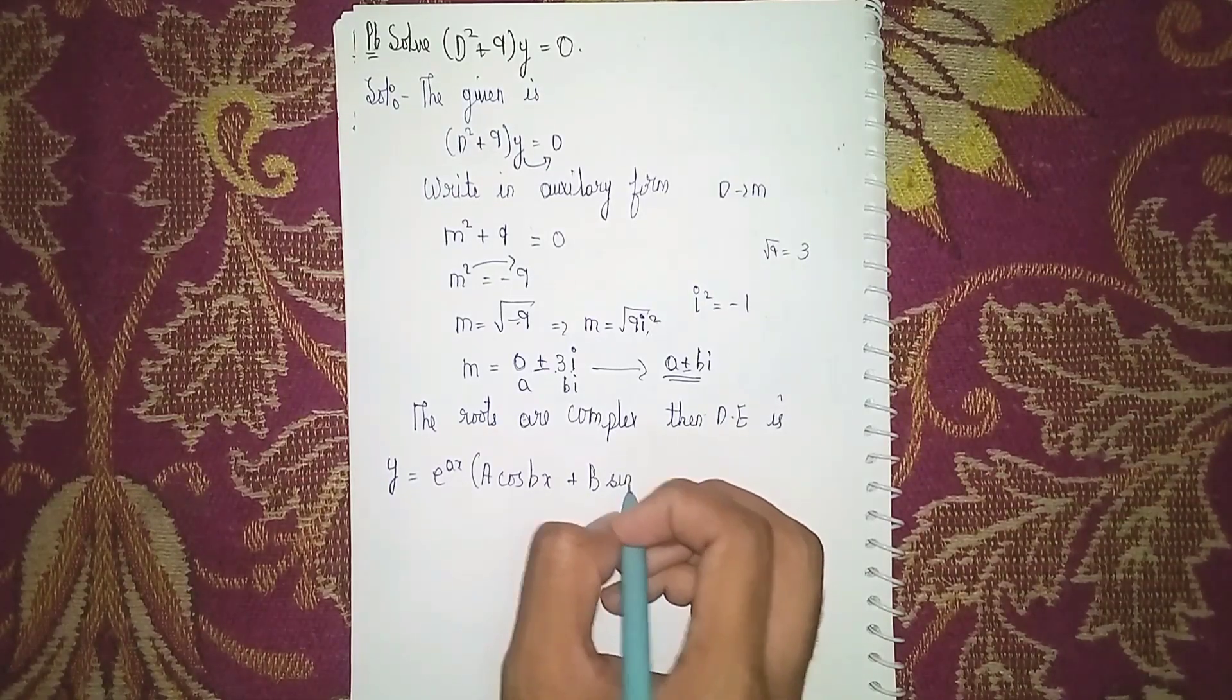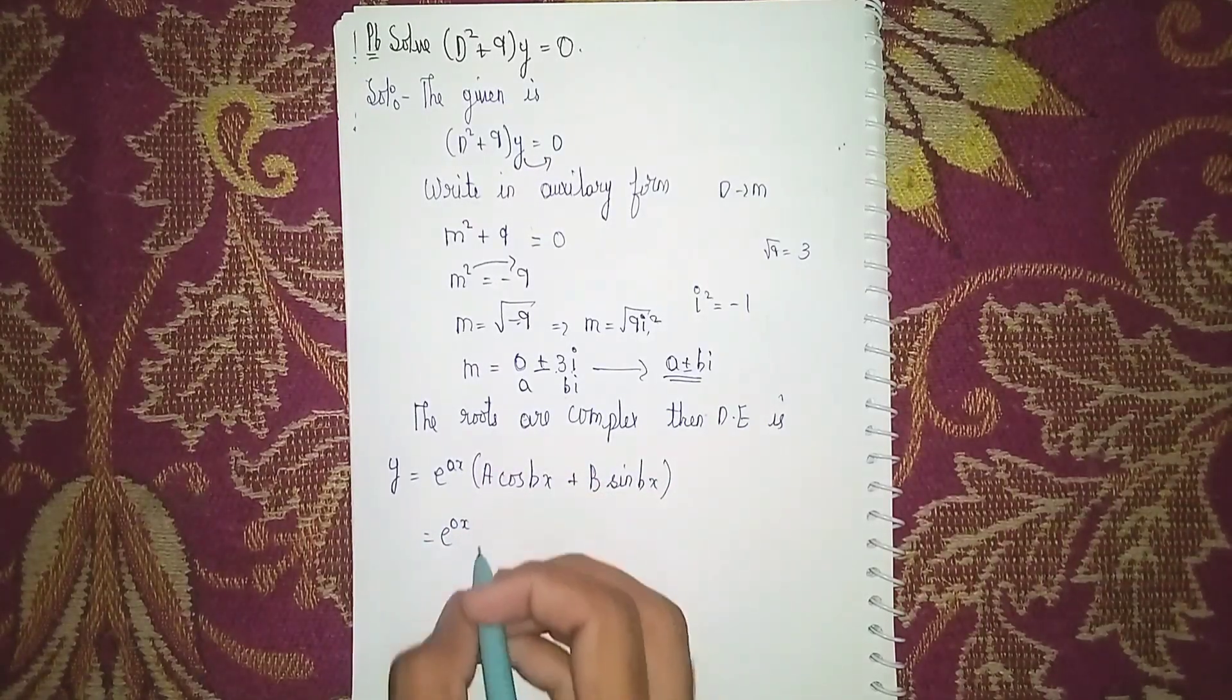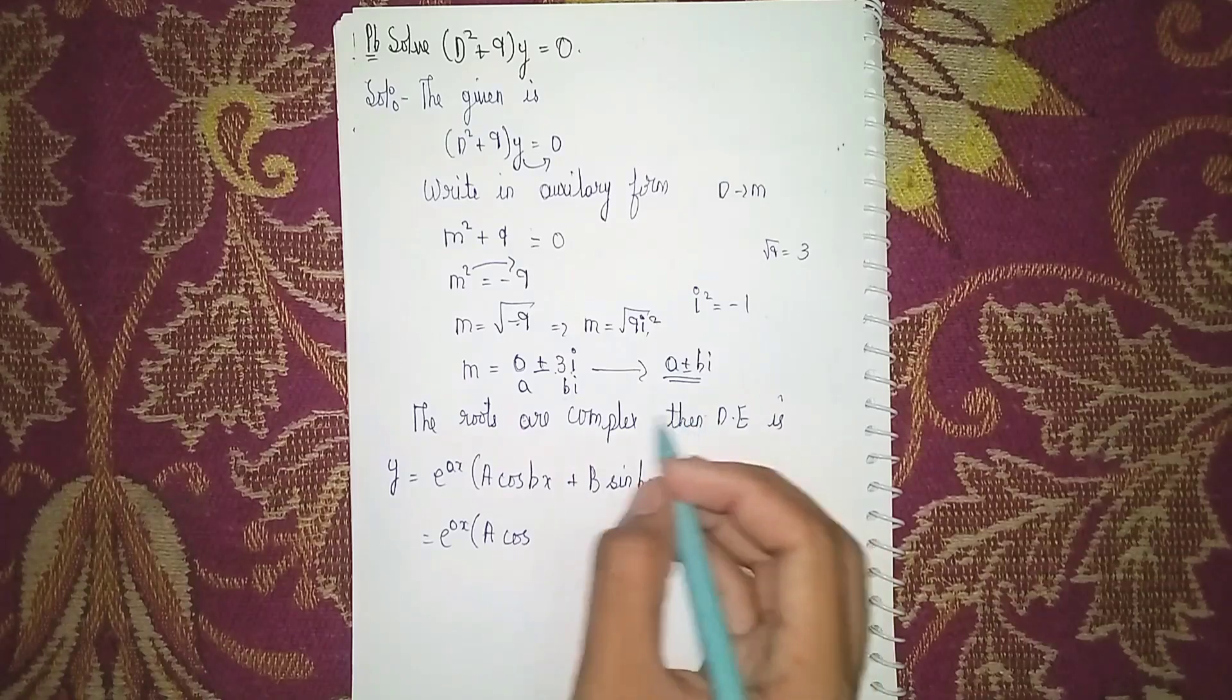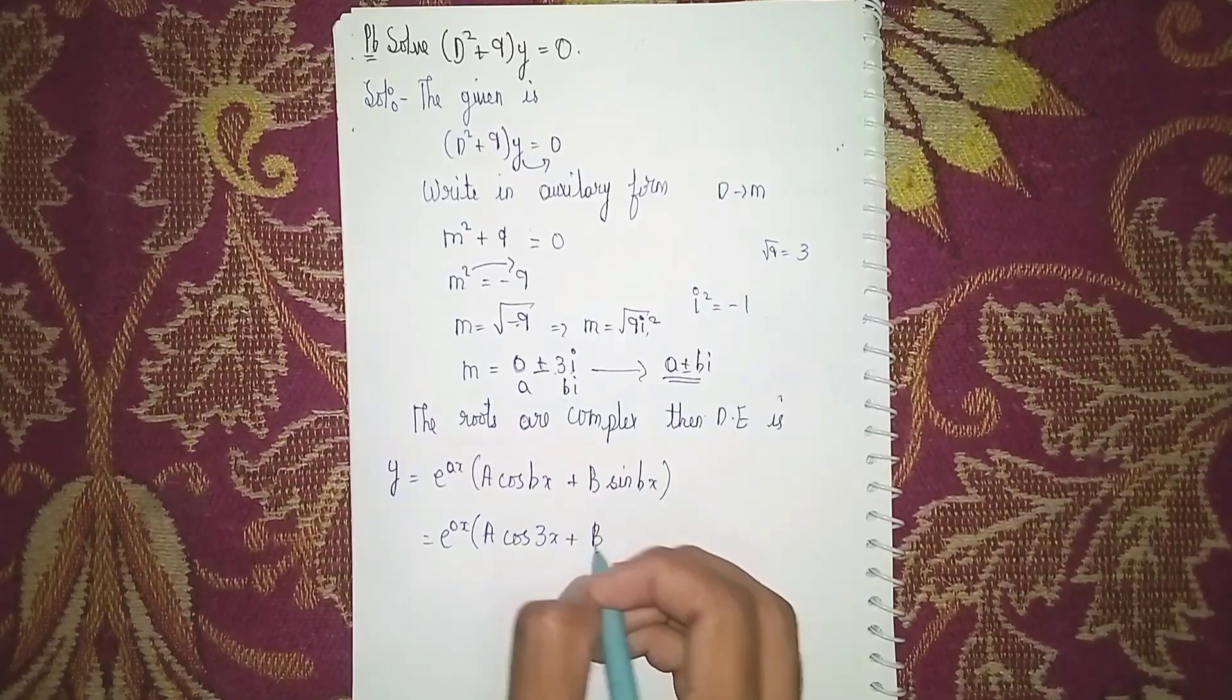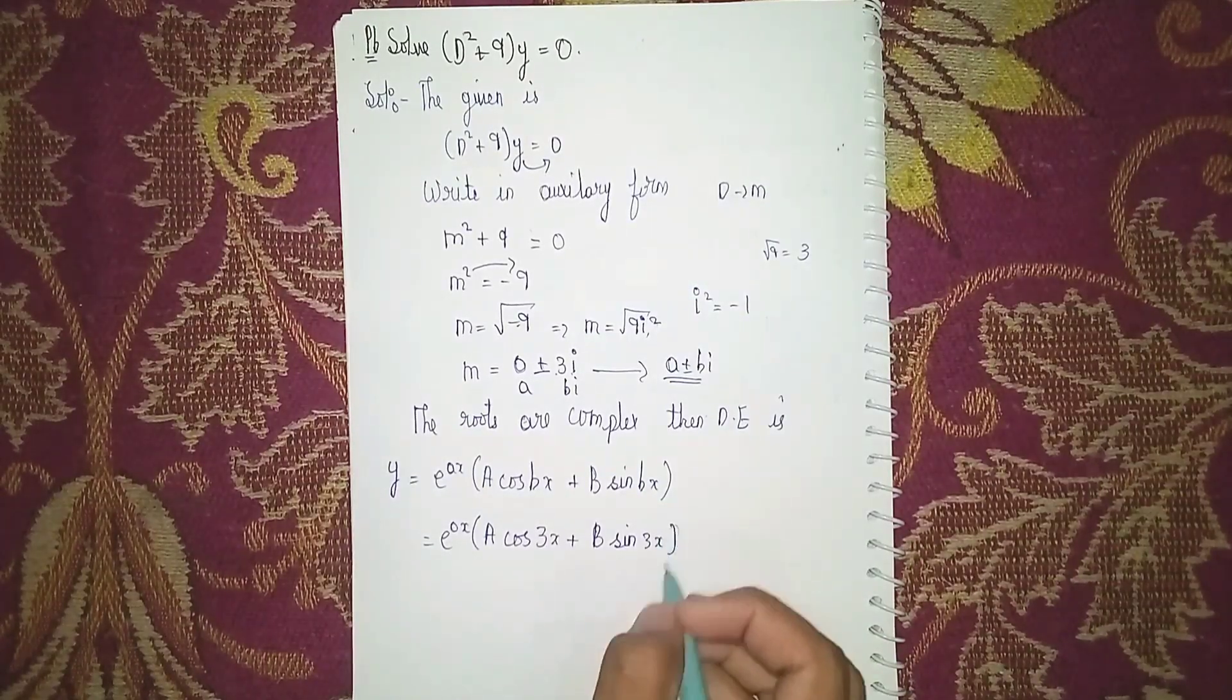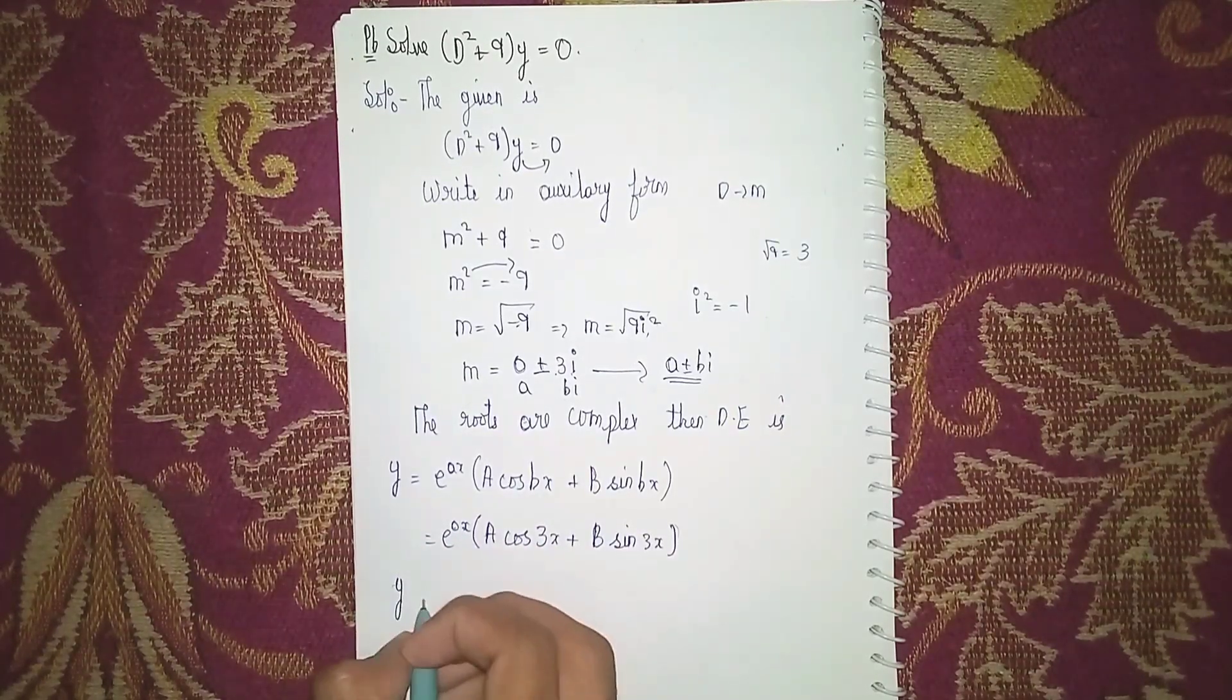It becomes e^(0x). a cos... what is b? b is 3. 3x + b sin b, here also b is 3x. Close bracket. e^(0x) means e^0. At last our answer is y equals...